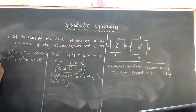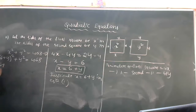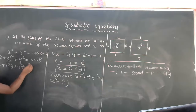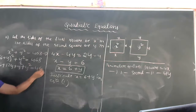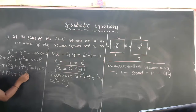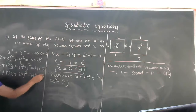We expand (6 + y)² using the formula (a + b)² = a² + 2ab + b². That gives us 36 + 12y + y². Adding the remaining y² from the equation: 36 + 12y + y² + y² = 468.